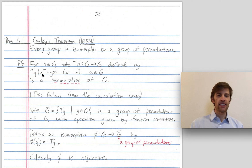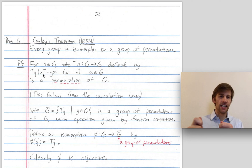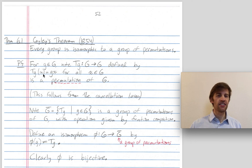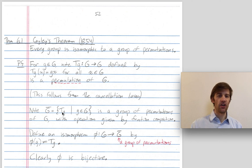So if x is any element of my group, then my permutation T sub g acts on x by multiplying on the left by g. So x gets permuted around and it gets mapped to g·x. T sub g is a permutation of all the elements of G — it's one-to-one and onto, it's bijective. This follows from the cancellation law, but I'll omit those details. My group G-bar of permutations is going to be the collection of all of these permutations T sub g.